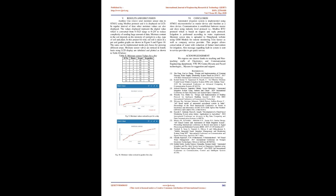Results and Discussion: Arduino Uno slaves send moisture sensor data to STM32 using Modbus protocol, and it is displayed on the LCD. At regular intervals, other moisture values are also displayed. The values displayed represent a digital value converted from a 0 to 1023 range to 0 to 255 to reduce complexity of sending large amounts of data. Moisture content in the soil depends on the intensity of sunlight in a day, type of soil, and plant. For this trial, red soil was taken in a pot and garden graphs are shown in Figures 9 and 10. The same can be implemented inside a poly house for growing different crops. Moisture sensor values noticed on an hourly basis using the LCD display are tabulated and plotted as shown in Table 2.